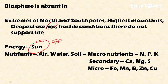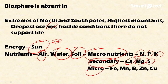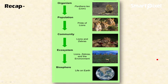The biosphere also provides nutrients, including air, water, and soil. Soil supports plant life by providing macronutrients including NPK (nitrogen, phosphorus, potassium), secondary nutrients like calcium, magnesium, and sulfur, and micronutrients like iron, manganese, boron, zinc, and copper. These are all essential elements required for plant growth, supplied by the soil.